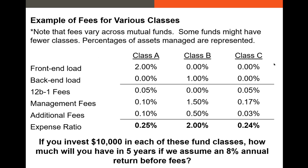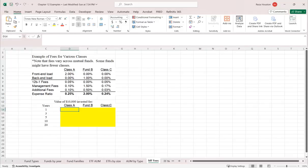Let's look at an example with three classes of mutual fund shares. One has a front-end load, one has a back-end load, and two have 12b-1 advertising fees. All have management fees and additional fees, making total expense ratios ranging from 24 basis points to 2%. Let's see how much we'll have at the end of five years if we invest $10,000 and assume an 8% return before fees.